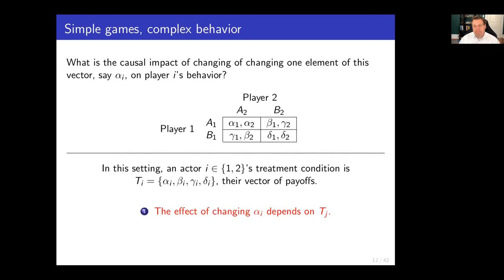Two points we're going to make. The first: if you change a payoff, such as alpha_i, by intervening with a treatment, the effect of doing that is going to depend on the other player's vector of payoffs — that is to say, the other player's treatment. That is definitionally a violation of SUTVA, because there should be no dependence between what a treatment does to me and what someone else's treatment condition is, if SUTVA holds. There's also a second version of SUTVA violation: changes in my treatment vector, alpha_i as an example, often have an effect on the other player's behavior, and may have no effect on my behavior at all. That's also a SUTVA violation — we have a case where my treatment is impacting somebody else but not really me.